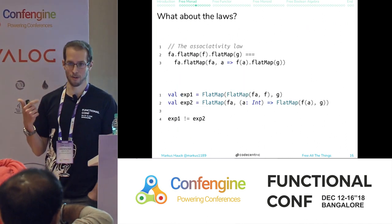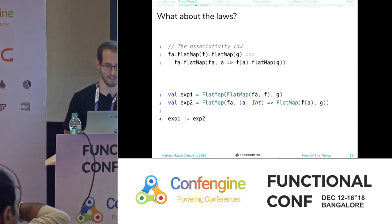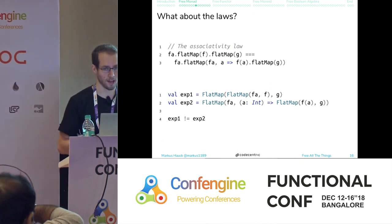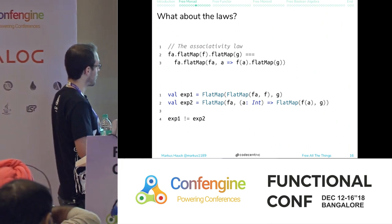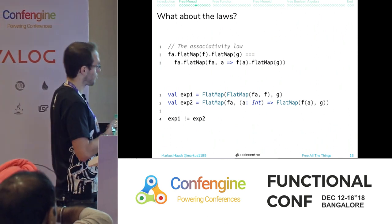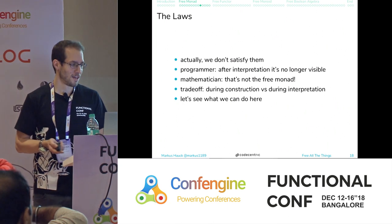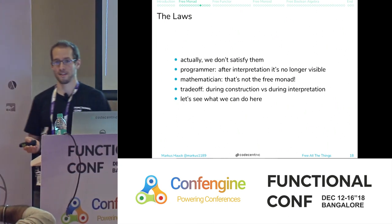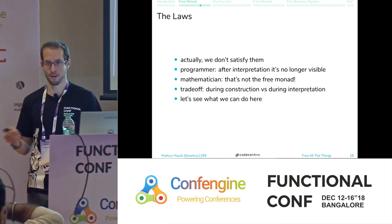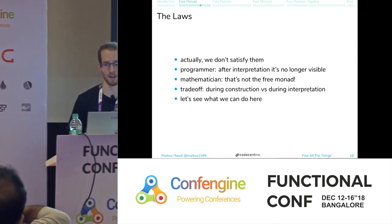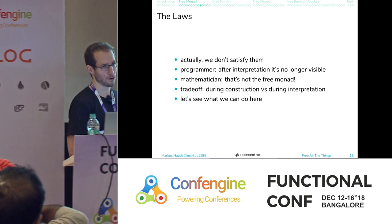Now we check the laws. The associativity law, when translated to our AST, produces two structurally different expressions for the left- and right-hand sides of the equation — they're not equal, so we're technically violating the laws and this isn't the true free monad. A programmer might argue that after interpretation into a lawful target monad nobody will notice, while a category theorist will disagree. There's a trade-off between enforcing laws via construction versus ignoring the issue and resolving it during interpretation.